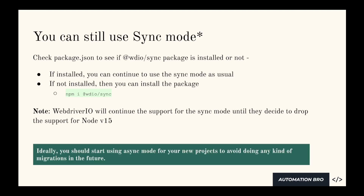So my personal advice would be that ideally you should start using async mode for your new projects to avoid doing any kind of migrations in the future. For example, if you decide to implement WebDriverIO in your project, instead of using sync mode, you should simply start using async mode. That way, whenever the new code comes out in version 8, it will be an easy transition for you. But if you start creating all of your tests in sync mode, you're going to have to do a bigger transition to async mode, because at the end the sync mode is going to get discontinued — if not now, maybe in a couple of years.